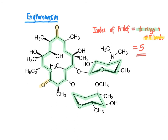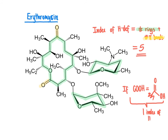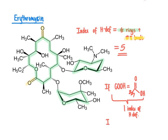When calculating the index of hydrogen deficiency, be careful about abbreviations within structures that represent pi bonds. If you see a COOH group, remember that represents a carbonyl group directly bonded to an OH group — a carboxylic acid — so even though it's written as COOH, there is a pi bond there contributing one to your index. Similarly, the aldehyde group, commonly abbreviated as CHO, is a carbonyl directly bonded to a hydrogen, and that carbonyl contributes one index of hydrogen deficiency.